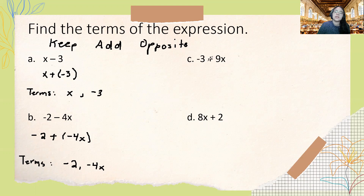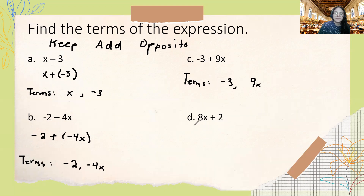For C, negative 3 plus 9x is already a sum, so the terms are simply the two parts being added: negative 3 and 9x. For D, 8x plus 2 is also already a sum, so the terms are 8x and 2.